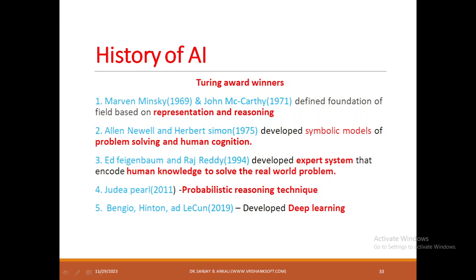Marvin Minsky and John McCarthy defined the foundation of the field on representation and reasoning. Newell and Simon developed a symbolic model of problem solving and human cognition. Feigenbaum and Raj Reddy developed expert systems that encode human knowledge to solve a real-world problem. Judea Pearl proposed probabilistic reasoning technique.